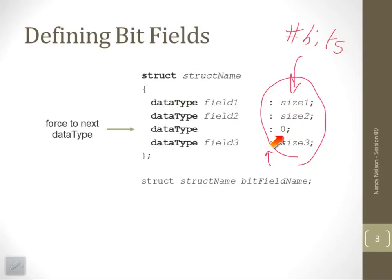The third one isn't saying we want a size of 0, but it's saying take me to the beginning of the next integer. So I want these two stored in one and this stored separately. This one would take size 3.